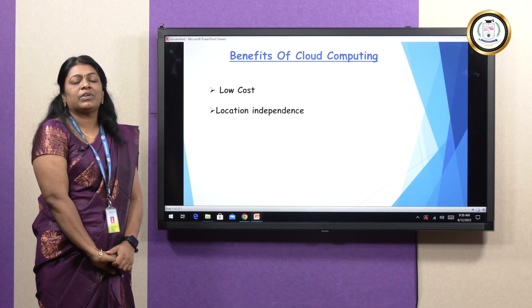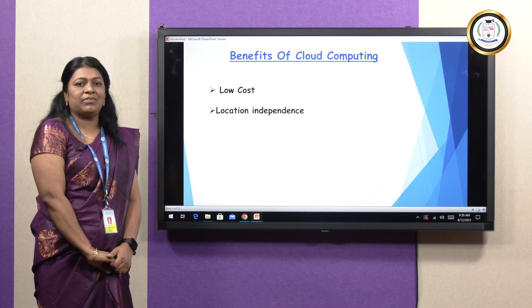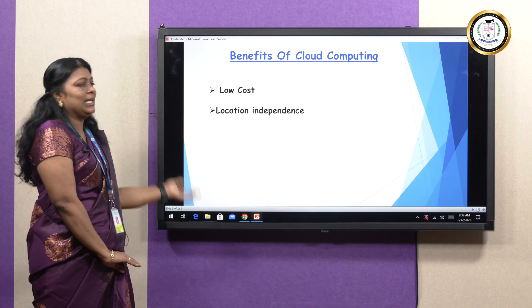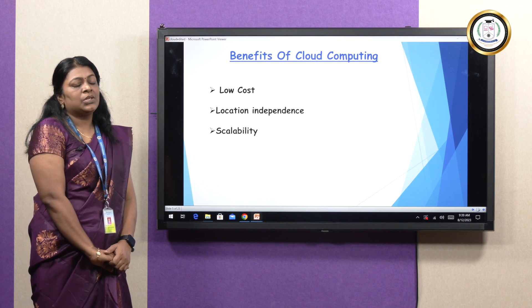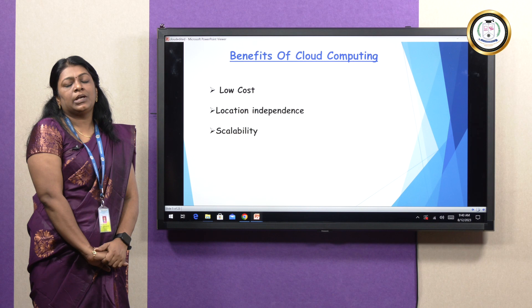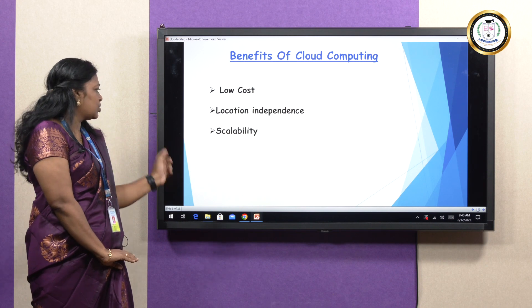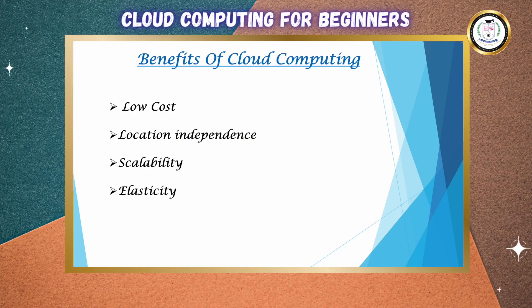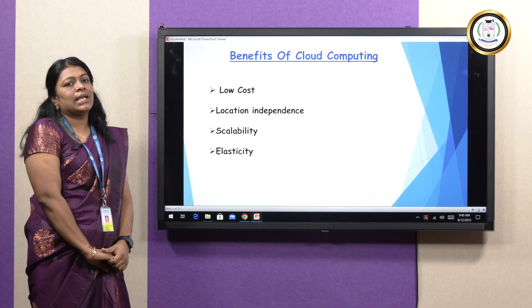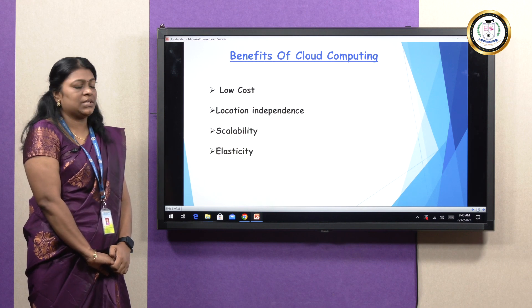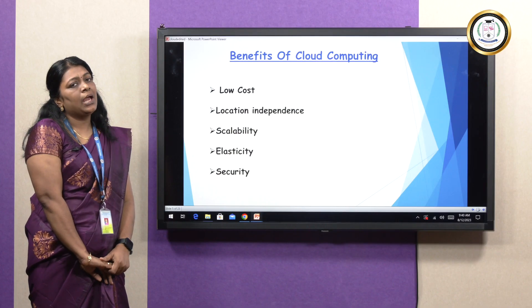Next benefit is location independence — you can use anything from anywhere; you can get computing power, storage, memory, everything from anywhere. Scalability means suppose we need three instances of computing power; after usage, if we don't want it, we can reduce the amount of computing power or instances — that is called scalability. Elasticity means automatically the cloud will cut down or increase your resources, which is helpful for workload management. And the last benefit is security — compared to on-premises, there is more security.